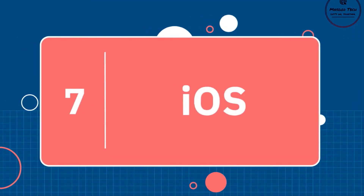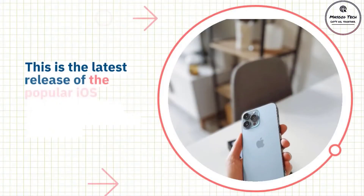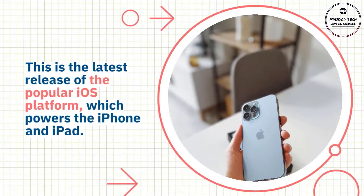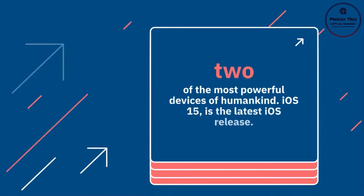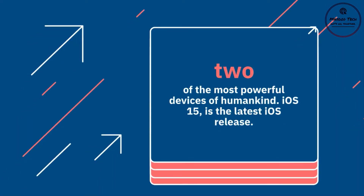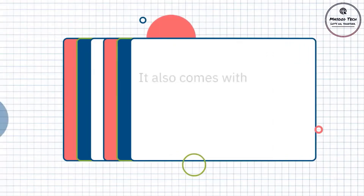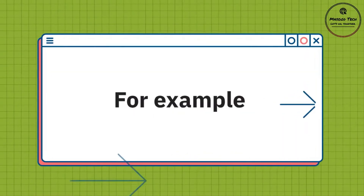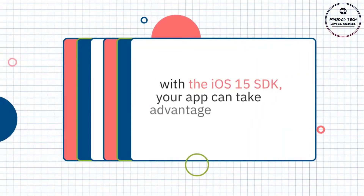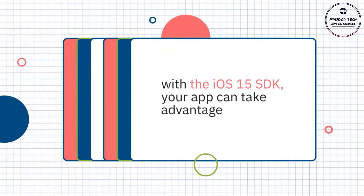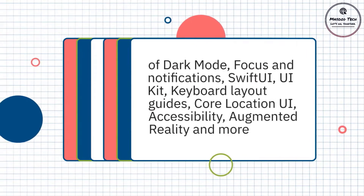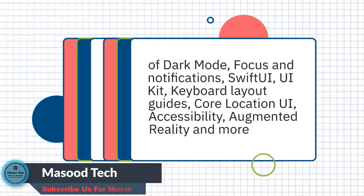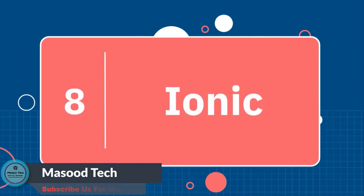Number seven: iOS. iOS 15 is the latest release of the popular iOS platform, which powers the iPhone and iPad — two of the most powerful devices in use today. It comes with exciting features developers have long been asking for. For example, with the iOS 15 SDK, your app can take advantage of dark mode, Focus and notifications, SwiftUI, UIKit, keyboard layout guides, Core Location, UI accessibility, augmented reality, and more.